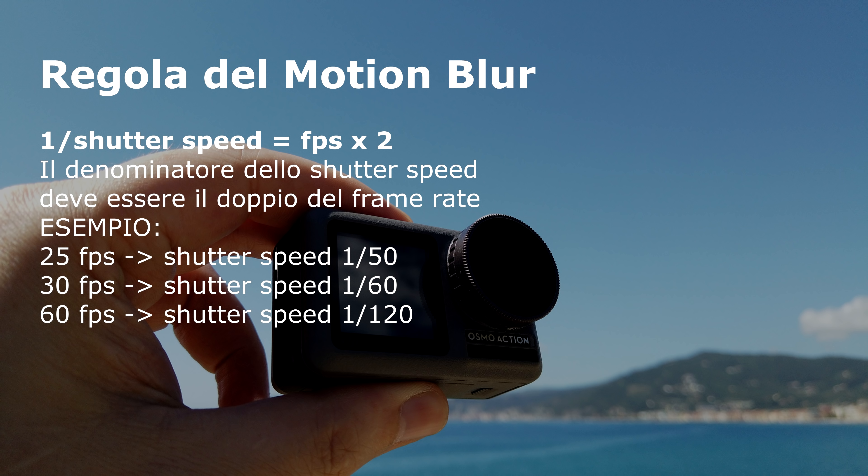Così se stiamo registrando a 25 fps bisogna portare lo shutter speed a un cinquantesimo, a un sessantesimo se stiamo registrando a 30 fps, a un centoventesimo a 60 fps e così via.